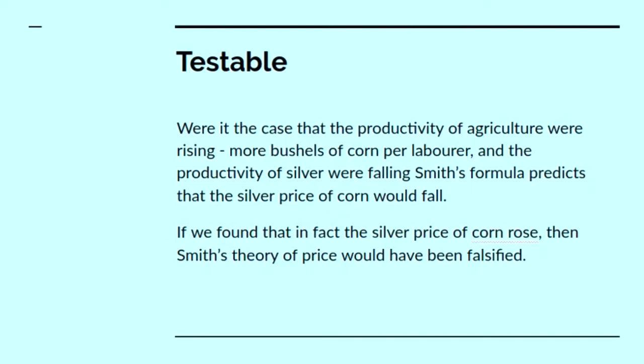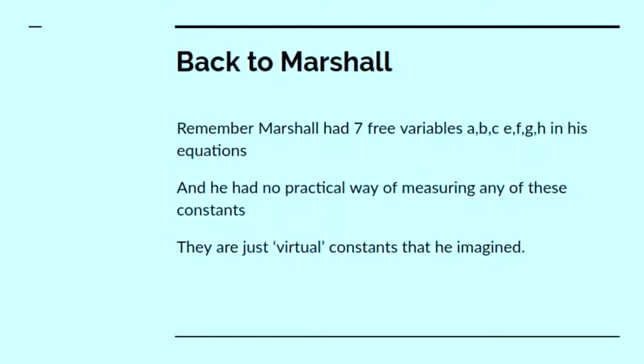Now, he has a testable theory here, Smith has, because if we're in the case that the productivity of agriculture were rising, that is to say more bushels of corn were produced per labour, and the productivity of silver were falling, that is to say the silver mines were getting depleted and requiring more labour, Smith's prediction is that the formula predicts that the silver price of corn will fall, that is to say a given pound of silver will buy more corn. If we found, historically, that in fact the silver price of corn rose, then Smith's theory of price would have been falsified. Smith actually went back looking at price records of corn on the Winchester market to 1200 AD. He's writing in the mid 1700s. So he looked 500 years back at the corn prices to test his theory.